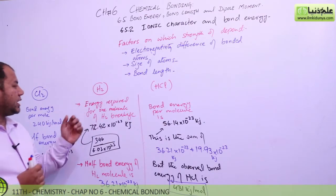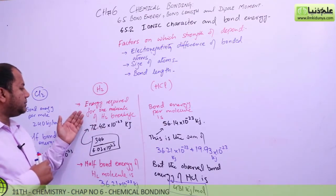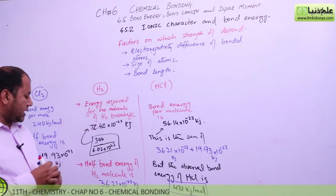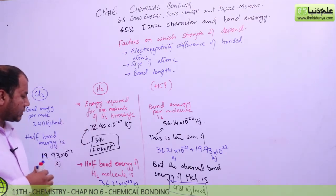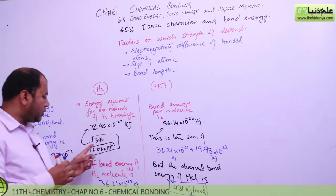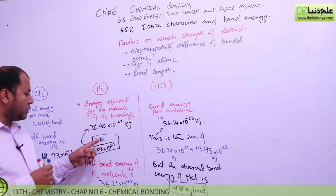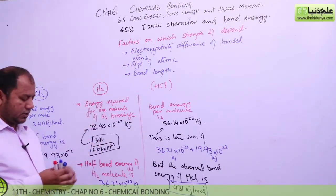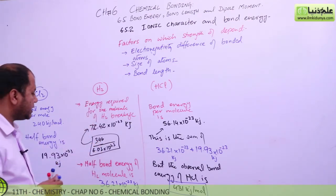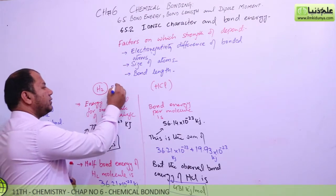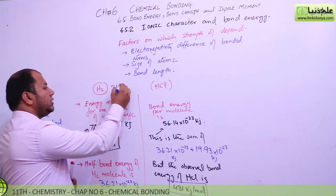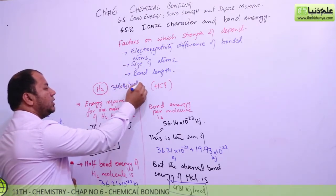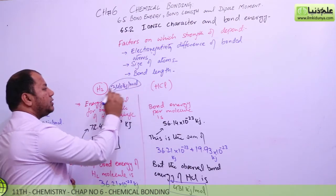If we look at the hydrogen-hydrogen bond, the bond energy of the hydrogen molecule is 346 kJ per mole.